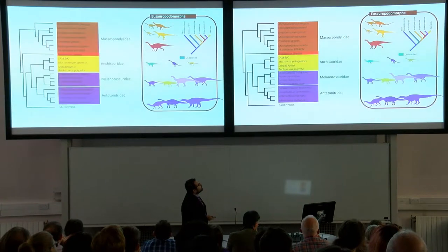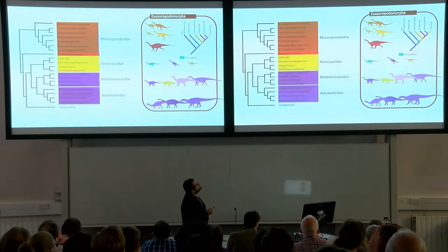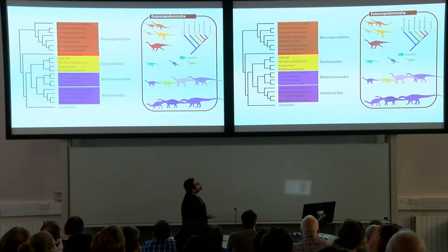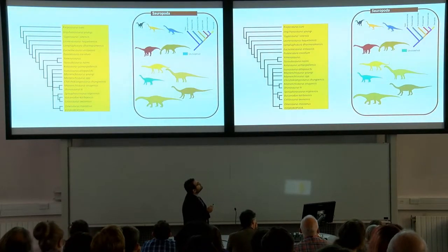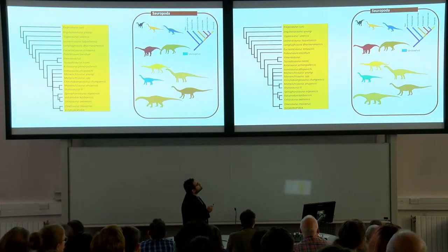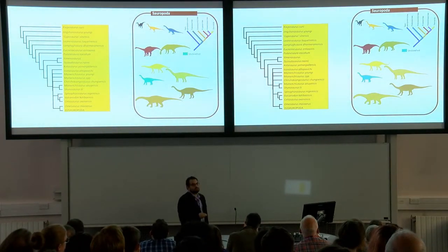What's interesting is that you get bipedal forms alternating with quadrupedal forms until you get to the sauropods, where you have bipedal forms at the base of the tree and then quadrupedal forms at the base of the tree.